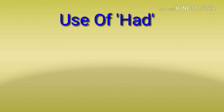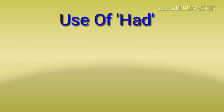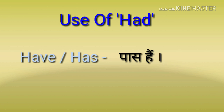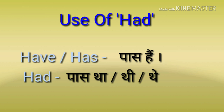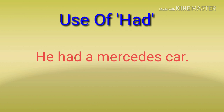Friends, 'have' or 'has' are present verbs. Their past form is 'had' — just as 'have' or 'has' is used in the present, 'had' is a past verb meaning 'tha' or 'thi'. For example, in present tense: uske paas ek Mercedes car hai — 'He has a Mercedes car.' Its past tense would be: uske paas ek Mercedes car thi — 'He had a Mercedes car.'